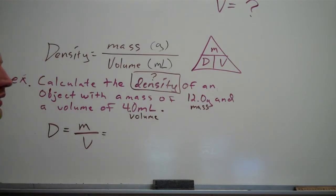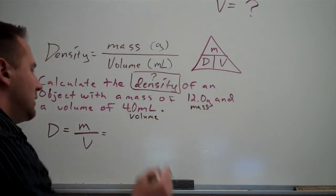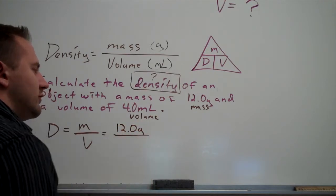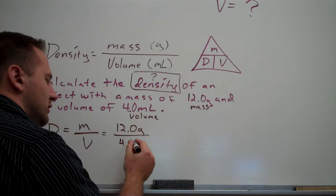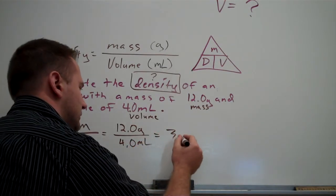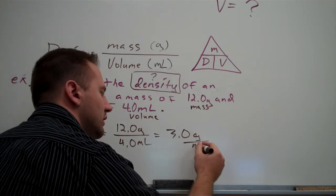Now at this point, all we have to do is plug in the information we're given in the right spaces. The mass is 12 grams, or 12.0 grams, divided by the volume which is 4.0 milliliters, giving us a final density of 3.0 grams per milliliter.